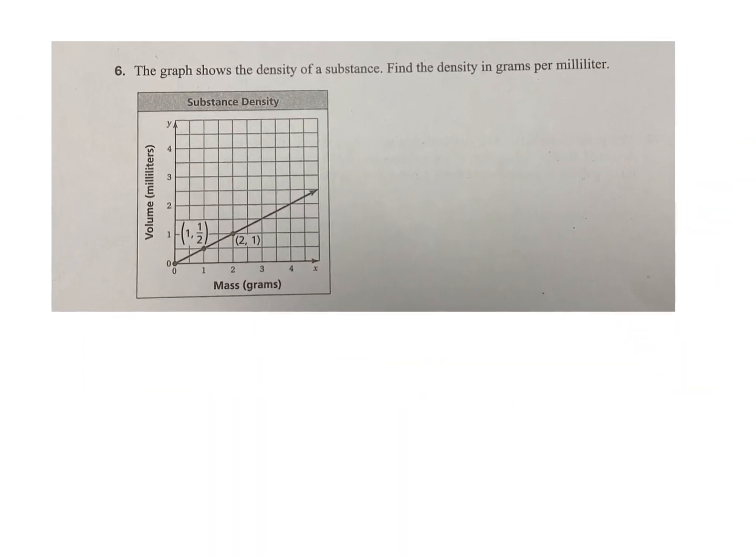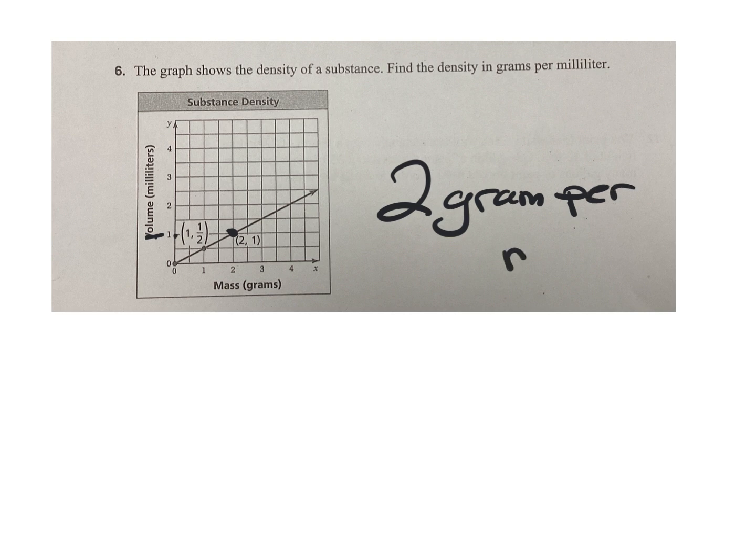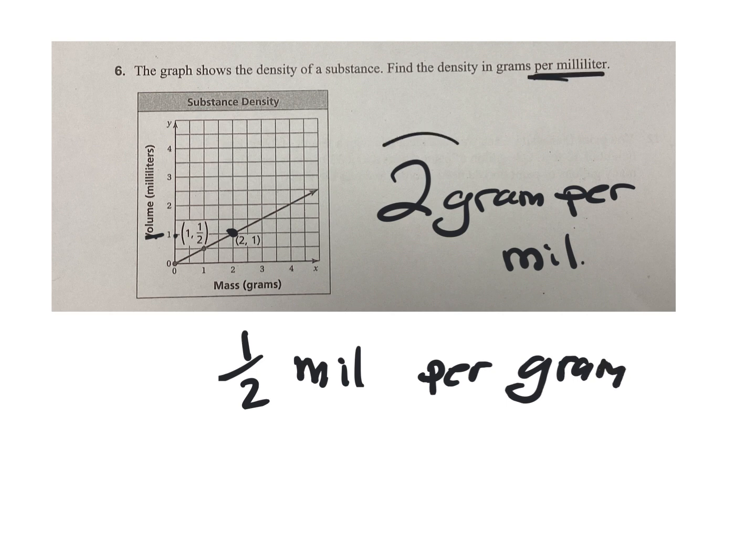This one, you just got to look at the graph. Graph shows the density of a substance. Find the density in grams per milliliter. So per milliliter is 1 milliliter, which is right here. So this is what I'm looking for. It would be 2 grams per milliliter. If I wanted it per gram, it would be 1/2 milliliter per gram. But it says per milliliter, so we'll go with this one.